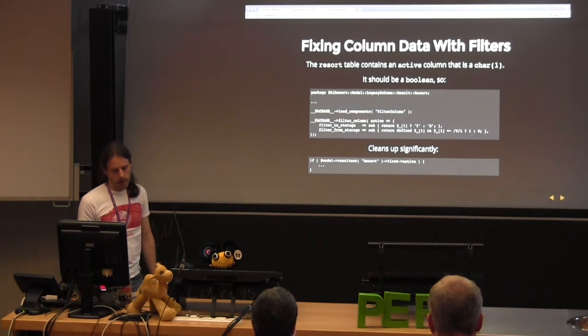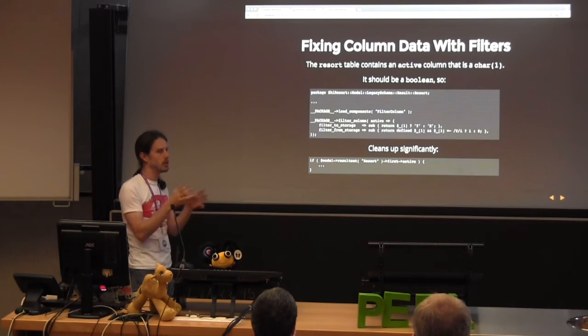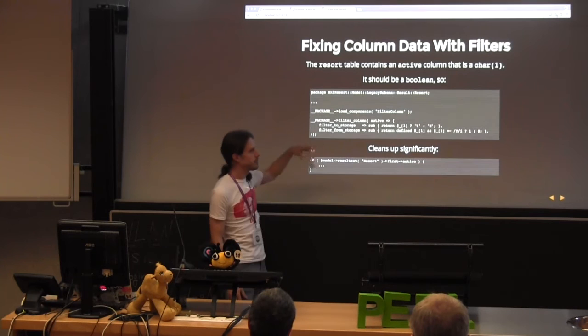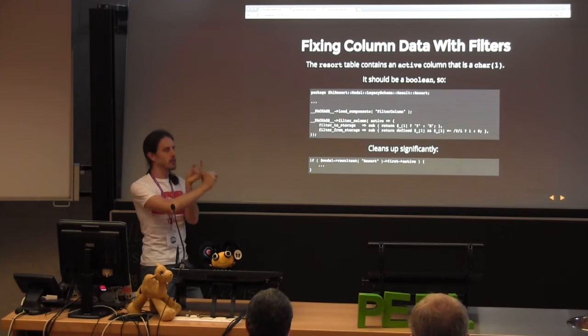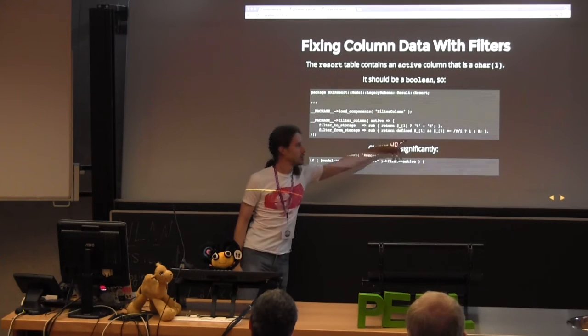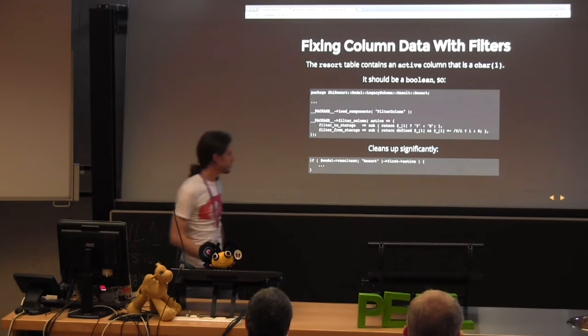The example in the schema I showed earlier was a column that was a char but should be a boolean. What we can do is tell DBIx::Class: whenever you pull this out of the database, run this little function and convert it. We have a lot of chars in our database where it's a 'y' or 'n' when it should be a boolean. DBIx::Class does it for you — when it comes out of the database it returns one or zero, and when you put it back in you just do the inverse. It makes the code much, much clearer.